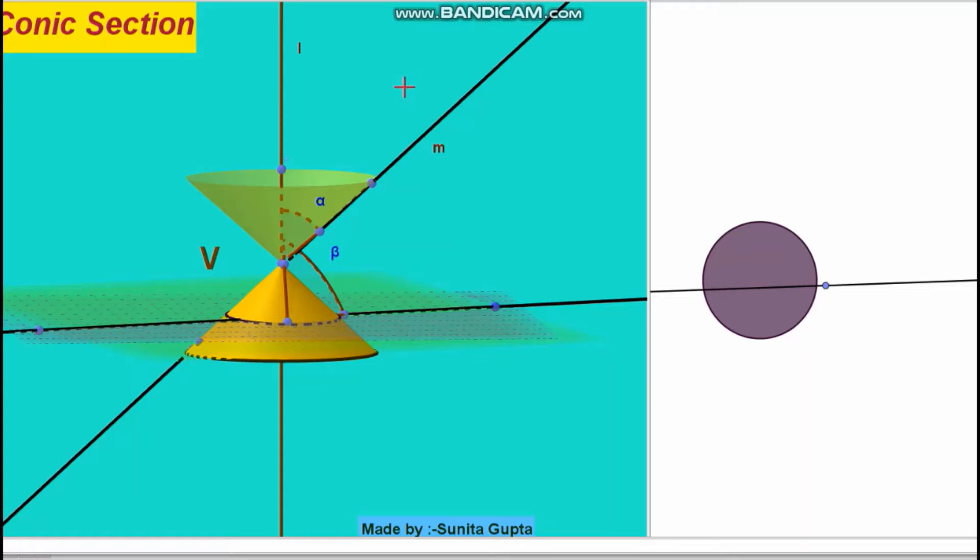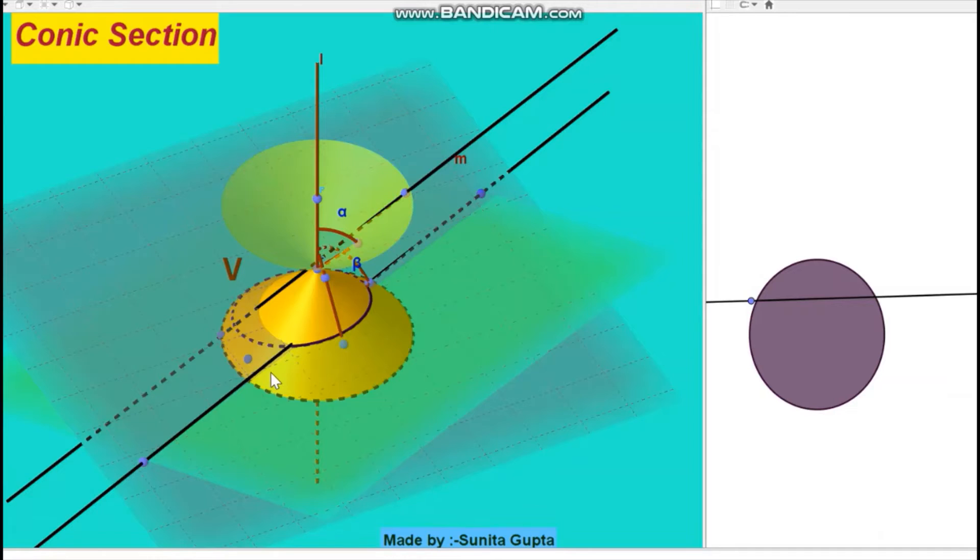The angle between axis and generator is alpha, and beta is the angle between axis and plane. If angle beta is 90 degrees, the conic section is a circle. When alpha is less than beta and beta is less than 90 degrees, the section is an ellipse.